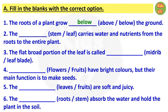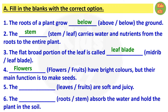Question three: the flat broad portion of the leaf is called midrib or leaf blade. The answer is leaf blade. Question four: flowers or fruits have bright colors, but their main function is to make seeds. The answer is flowers. Question five: the leaves or fruits are soft and juicy.